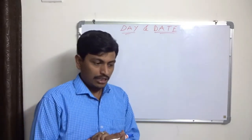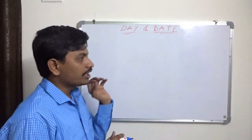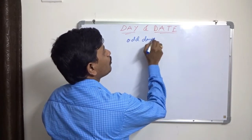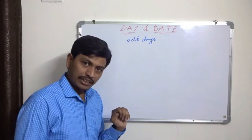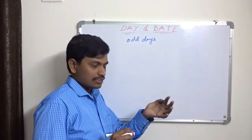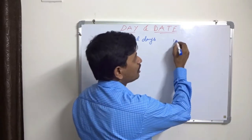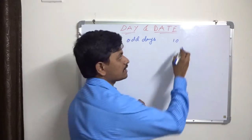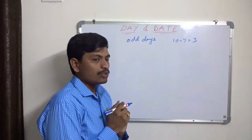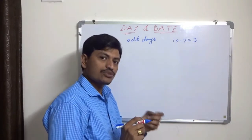Before learning how to find the day of any date, we have to learn some basic things. One of the basic things is odd days. What are odd days? Suppose today is Monday — after three days, what day will come? We can easily count: Tuesday, Wednesday, Thursday. After three days, Thursday will come. After ten days, we subtract seven and the remainder is three, so we count only three days: Tuesday, Wednesday, Thursday.